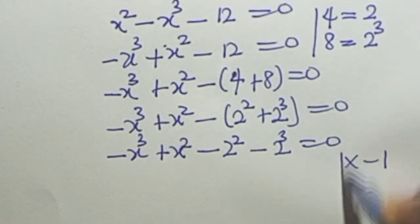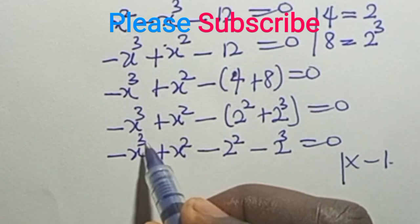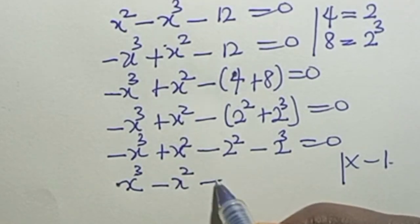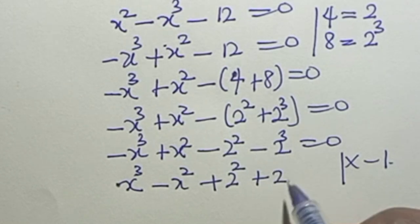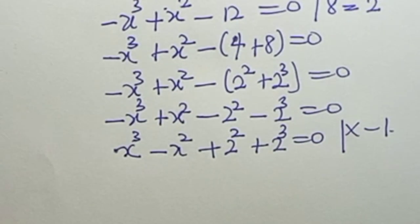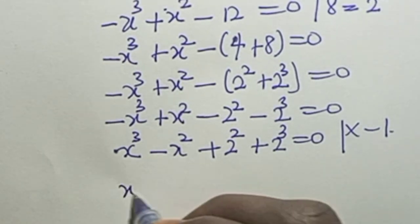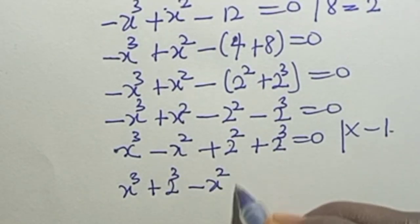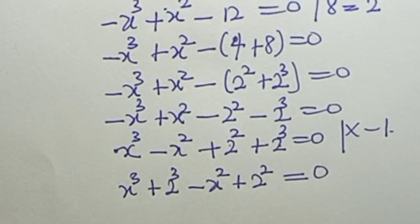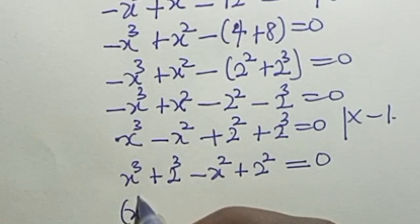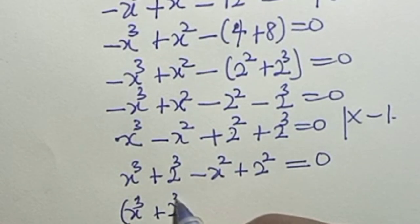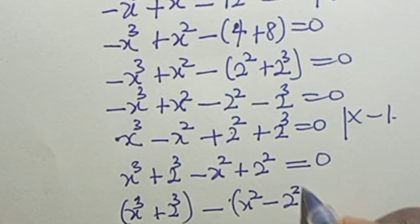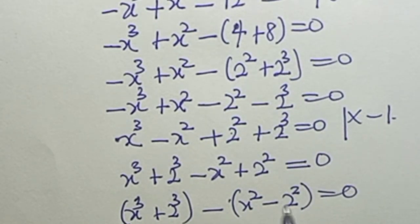Since s cubed is negative we multiply through by minus 1, giving us: s cubed minus s squared plus 2 squared plus 2 cubed equals zero. We then group by powers: s cubed plus 2 cubed minus s squared plus 2 squared equals zero, which means s cubed plus 2 cubed minus (s squared minus 2 squared) equals zero.